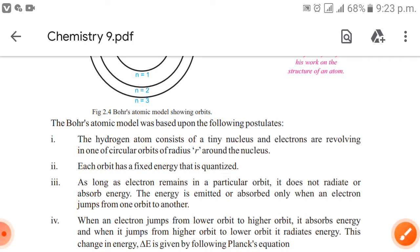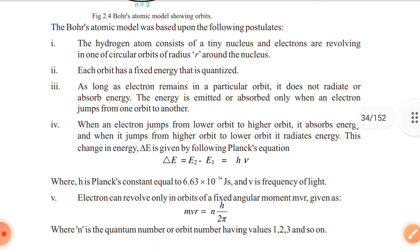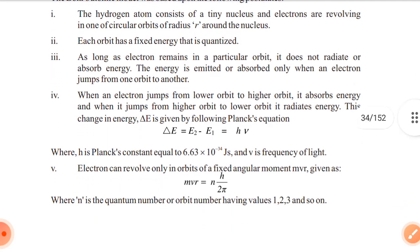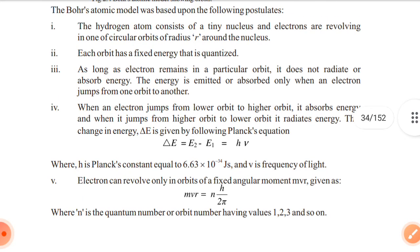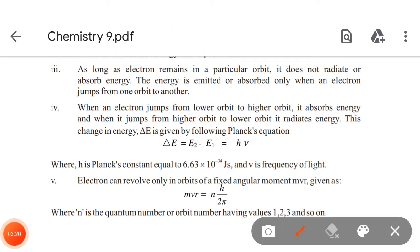It will not continuously move. When it will move, at that time there would be release or emission of energy. When an electron jumps from lower orbit to higher orbit it absorbs energy, and when it jumps from higher orbit to lower orbit it radiates energy.